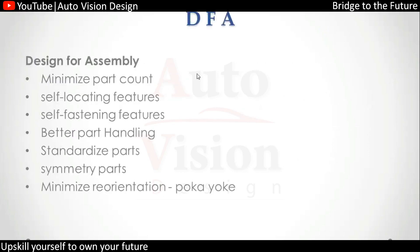In Design for Assembly, the content includes minimizing part count, which reduces cost. We can also add locating features so the part will be self-located with no extra self-locating required. We can use self-fastening features such as positive fixation — using a snap fit rather than metal clips, lantern clips, or plastic clips — which saves cost and assembly time.